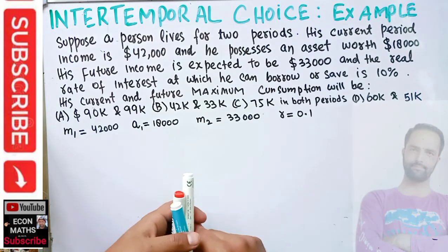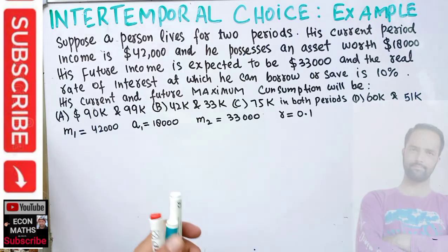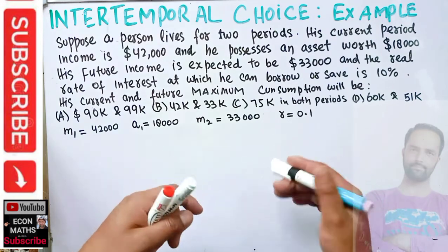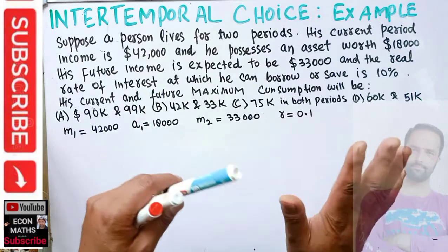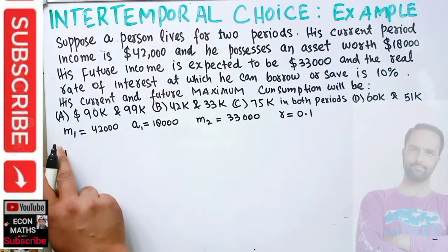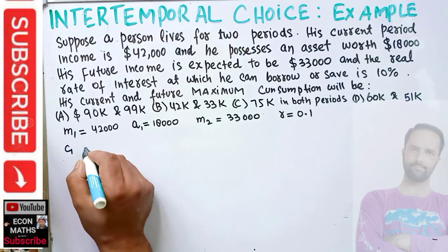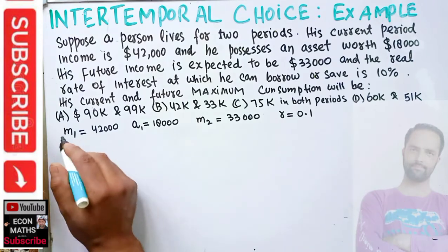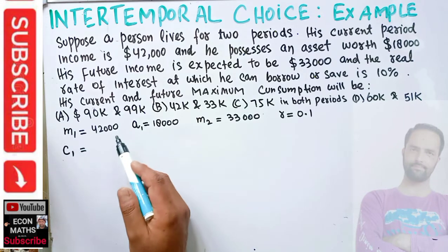To solve this type of question, we first need to find the lifetime budget constraint. I explained this in an earlier video but I will recapitulate how to form the lifetime budget constraint. Let C1 denote consumption in the first period.